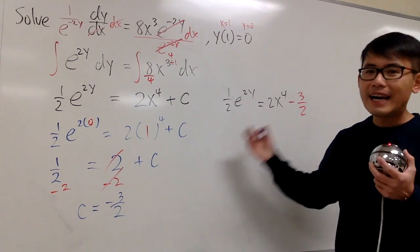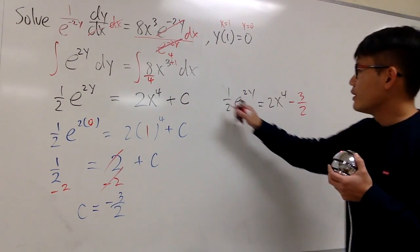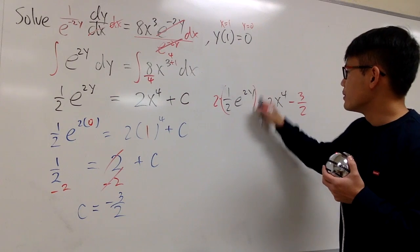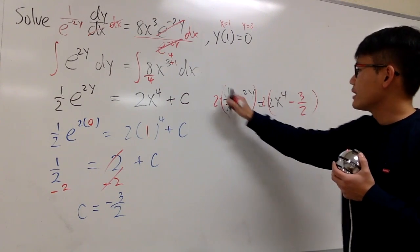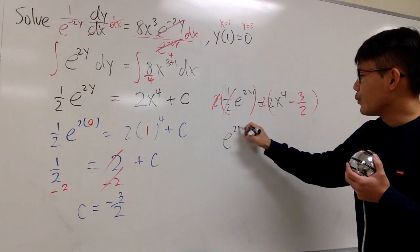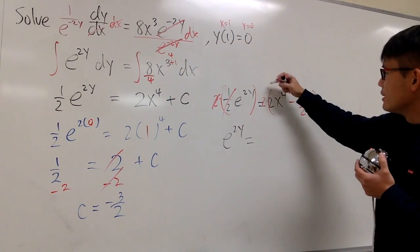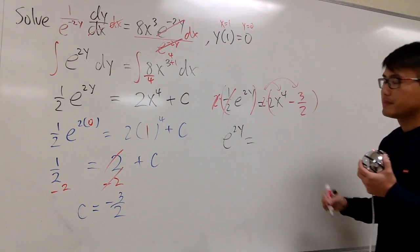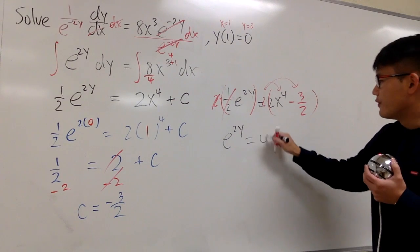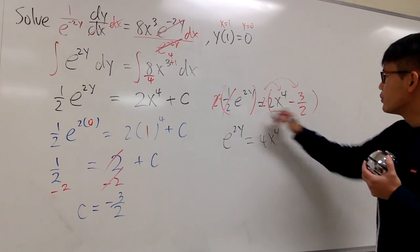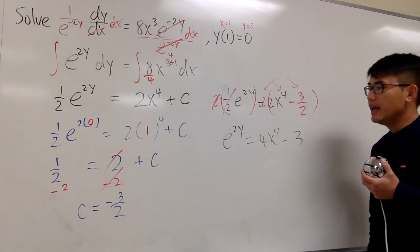And now, as I said, I would like to isolate the y. To do so, let's multiply everything by 2. So that this and that will cancel. And we will have e to the 2y. And this is equal to, distribute, 2 times 2 is 4x to the 4th power. 2 times that is just minus 3. And at the end,